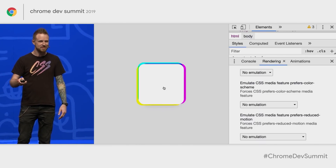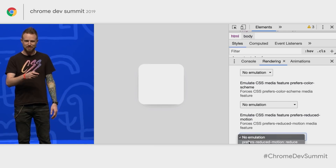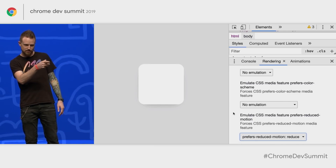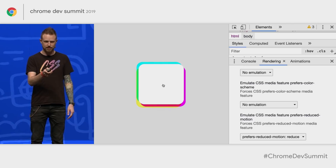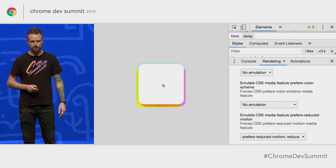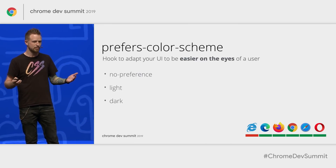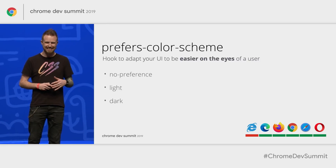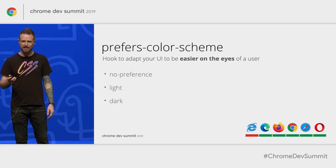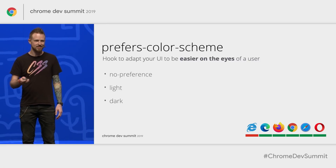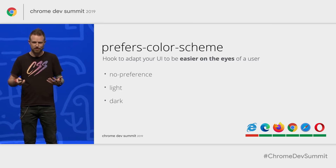DevTools has got your back in case you want to test it. Pop it open, go to the Rendering tab — you can get there from the snowman on the left of the console — and you can change the properties and test your work. Another popular one, which you might have noticed on the Chrome Dev Summit site, is prefers-color-scheme, light or dark.